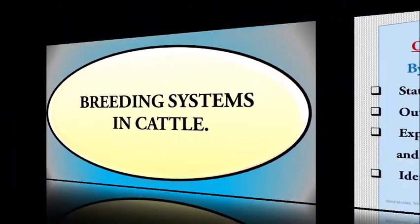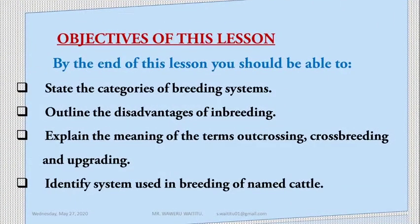Let us look at the objectives of this lesson. By the end of this lesson, you should be able to: number one, state the categories of breeding systems; number two, outline the disadvantages of inbreeding; number three, explain the meaning of the terms outcrossing, crossbreeding, and upgrading; and number four, identify the systems used in breeding of named cattle.